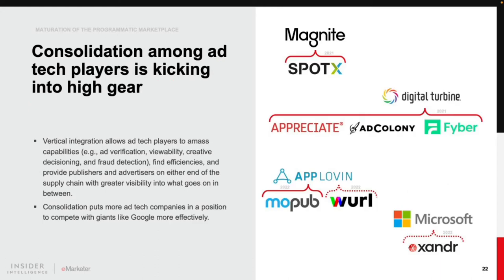Another function of maturation in the programmatic marketplace is consolidation. Last year was a hot one for consolidation activity among ad tech players. Magnite, the world's largest sell-side platform, acquired SpotX, another major SSP. Mobile advertising platform Digital Turbine brought on mobile ad tech companies Appreciate, AdColony, and Fyber. The sector hit the ground running in 2022, with Twitter finalizing its sale of in-app monetization platform MoPub to AppLovin in January. We do expect more mergers and acquisitions this year, including AppLovin's acquisition of CTV software platform Wurl, expected to close during the first half of this year, and Microsoft's purchase of Xandr, still pending regulatory review.